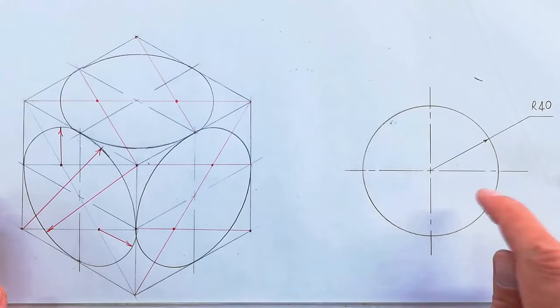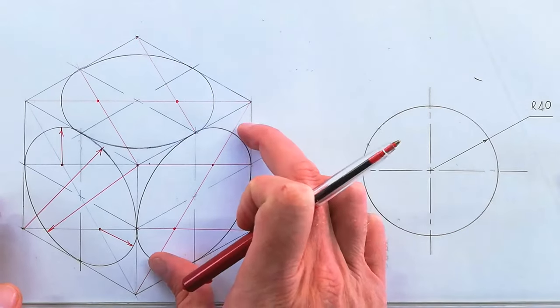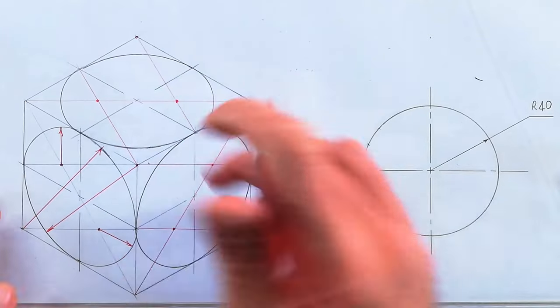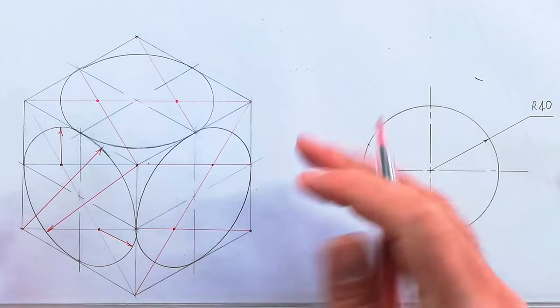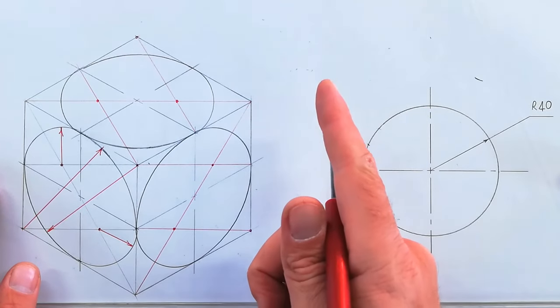Right, so there it is. We've taken this circle and projected it into isometric in three different views for you to practice how to draw an isometric circle. Thank you for watching. Now it's your turn.